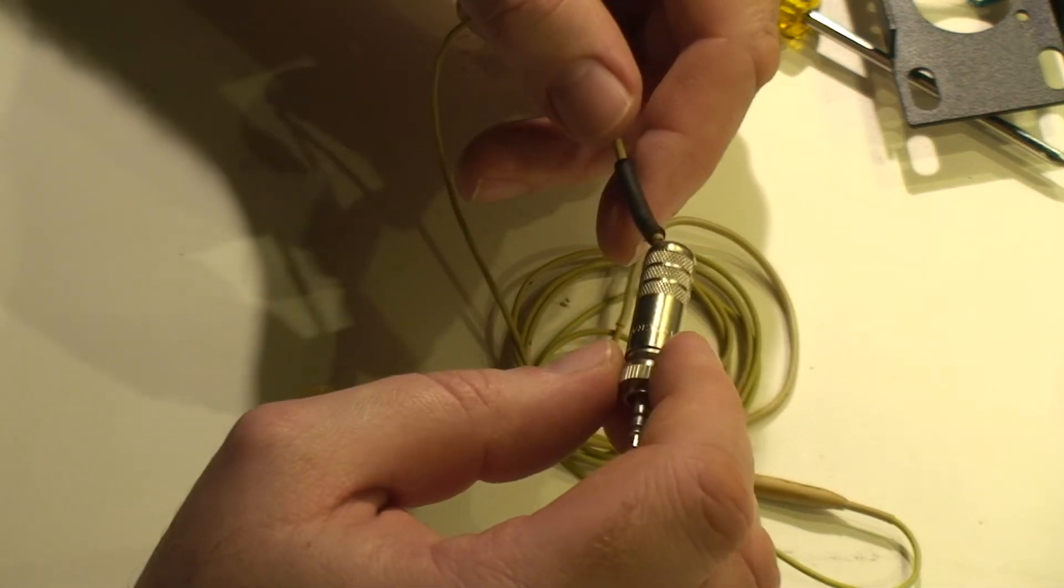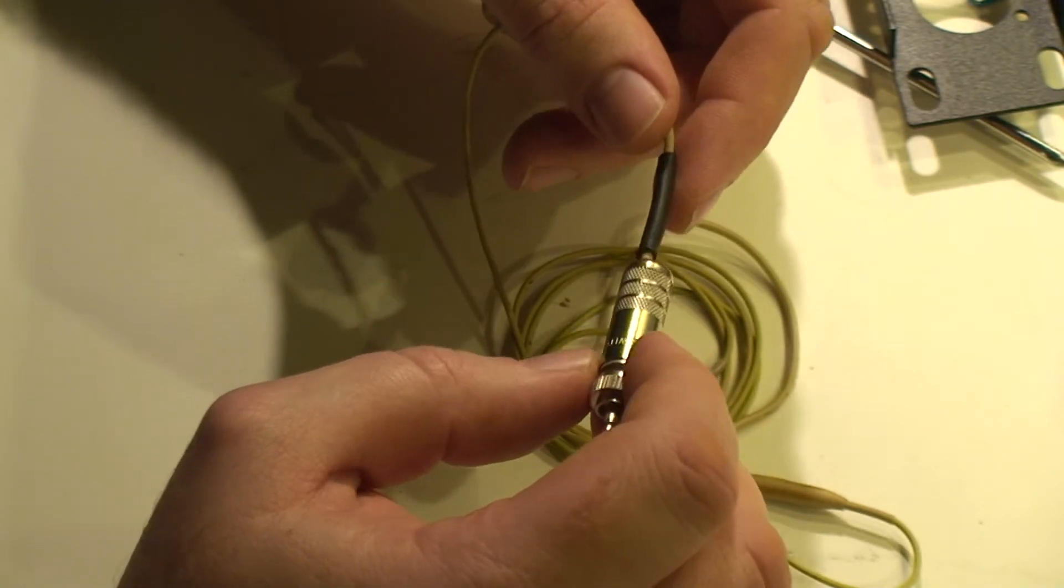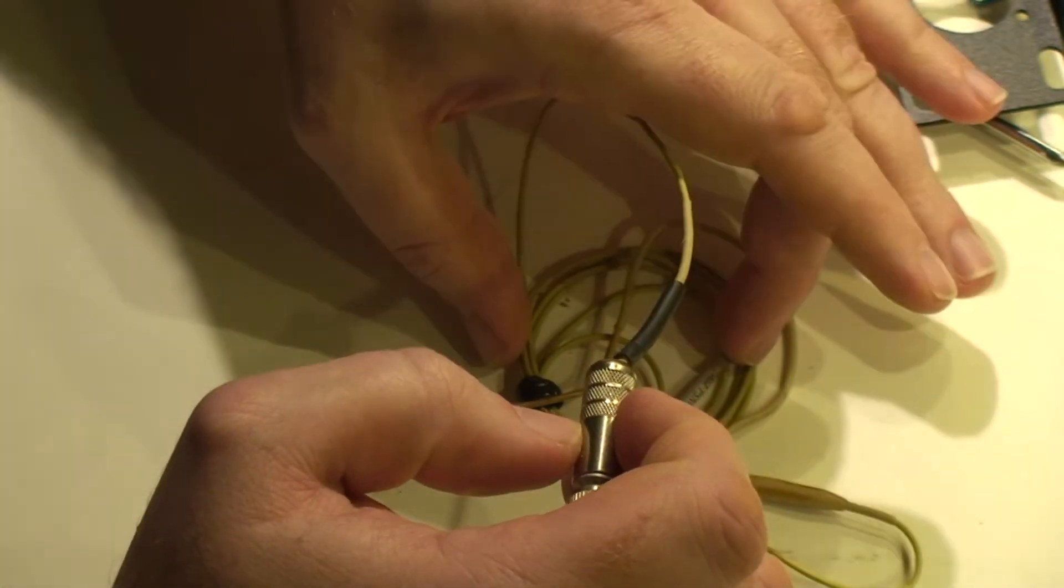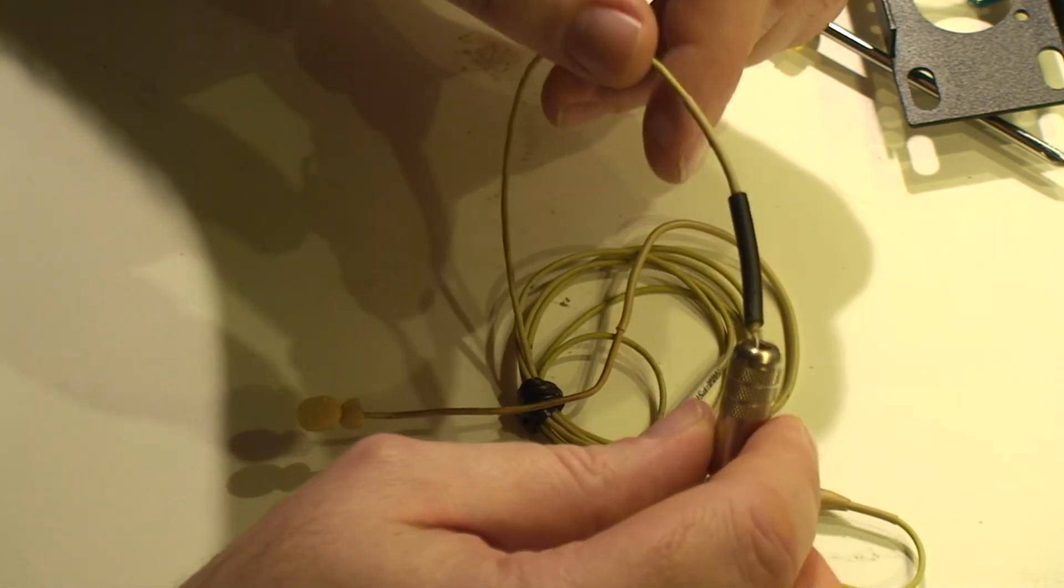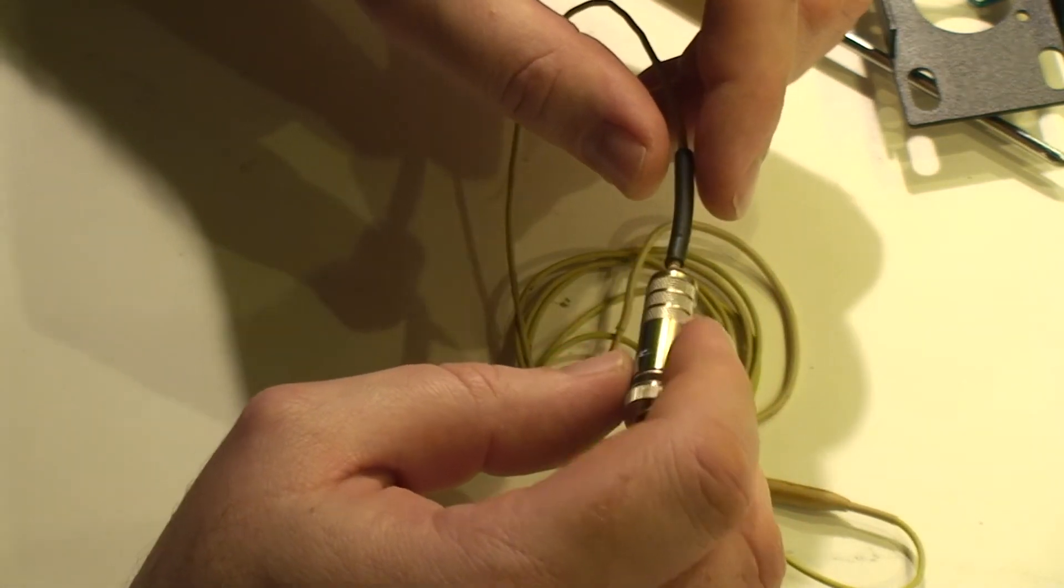Ideally, you want to get Countryman E6 ear sets. They're much more reliable, and when they do have a problem, it's very easy to swap out that cable. The cable's only $50, whereas the whole microphone is $310 with a cable. And you're going to get the best sound quality. Alright.